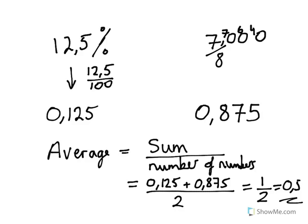So the question asked: what decimal number is exactly between 12.5% and 7/8? The decimal number between the two is 0.5. So the answer is 0.5.